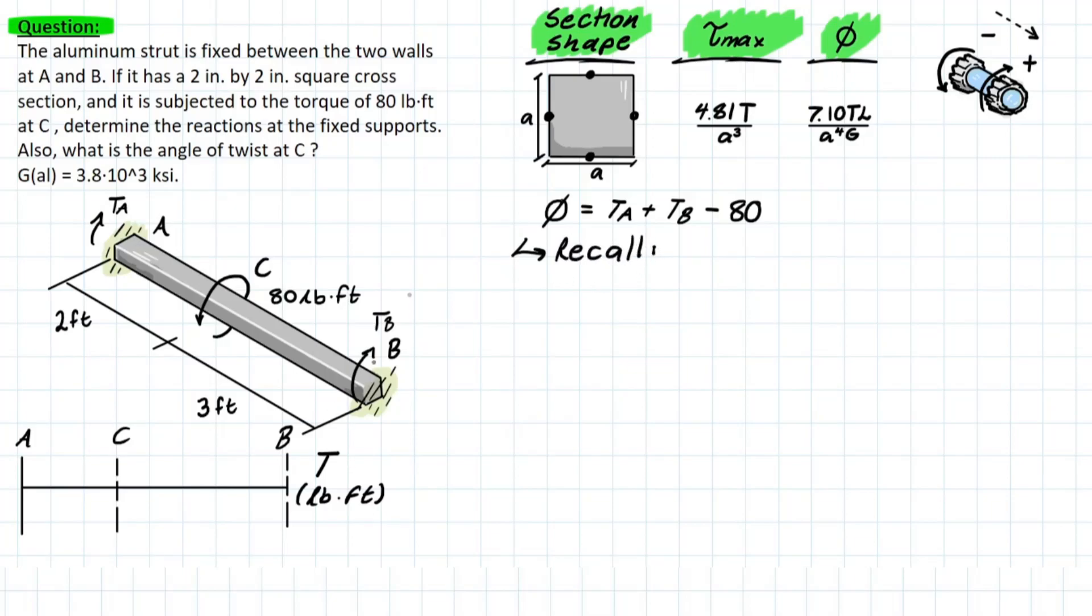We also need to recall some information about indeterminately torque loaded assemblies. We know that because of these fixed ends at B and at A, the angle of twist created at A is going to be equal to the angle of twist created at B, and they're both going to be equal to zero, because they're super locked in place. If you take an infinitesimal point right at those fixed ends, the angle of twist will equal zero.